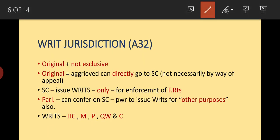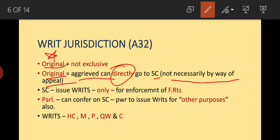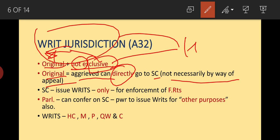Next is writ jurisdiction. It is the original jurisdiction of the Supreme Court — 'original' meaning an aggrieved party can directly go to the Supreme Court without necessarily going by way of appeal from the High Court. However, it is 'not exclusive' — meaning writ jurisdiction is also available with High Courts under Article 226.